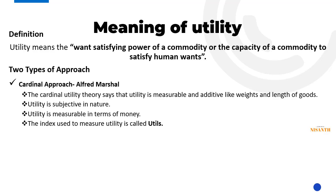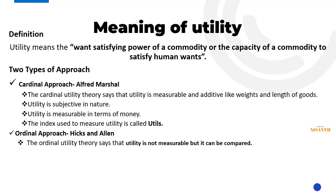The index used to measure utility is called 'utils.' Just as weight is measured in kilograms and length in kilometers, utility is measured in utils. However, in the ordinal approach, utility is not exactly measurable but can be compared. The ordinal approach was introduced by Hicks and Allen, while Alfred Marshall developed the cardinal approach.